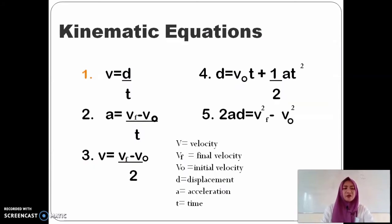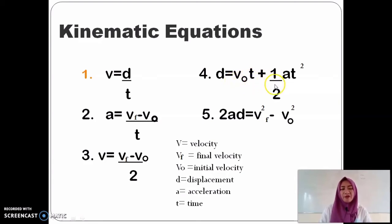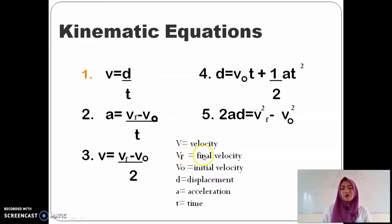There are five kinematic equations. First, V is equal to D over T, or velocity is equal to displacement over time. Second, acceleration is equal to final velocity minus initial velocity over time. Third, average velocity is equal to final velocity minus initial velocity over time. Fourth, displacement is equal to initial velocity times time plus one-half acceleration times time squared. Fifth, 2 times acceleration times displacement is equal to final velocity squared minus initial velocity squared. Where V is the average velocity, V sub F is the final velocity, V sub O is the initial velocity, D is the displacement, A is the acceleration, and T is the time.